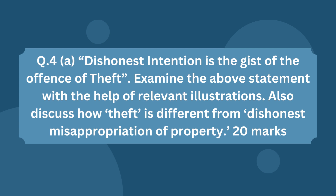Question 4, Part A states: 'Dishonest intention is the gist of the offense of theft — examine the above statement with the help of relevant illustrations and discuss how theft is different from dishonest misappropriation of property.' Start by defining theft and laying down its essentials, also give an illustration. For the second part, list out the differences between theft and dishonest misappropriation of property in tabular form.